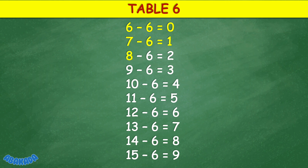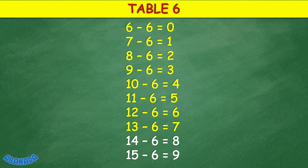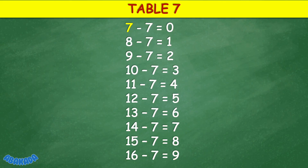Table 6: 6 minus 6 equals 0, 7 minus 6 equals 7, 7 minus 6 equals 1, 8 minus 6 equals 2, 9 minus 6 equals 3, 10 minus 6 equals 4, 11 minus 6 equals 5, 12 minus 6 equals 16, 13 minus 6 equals 7, 14 minus 6 equals 8, 15 minus 6 equals 9.